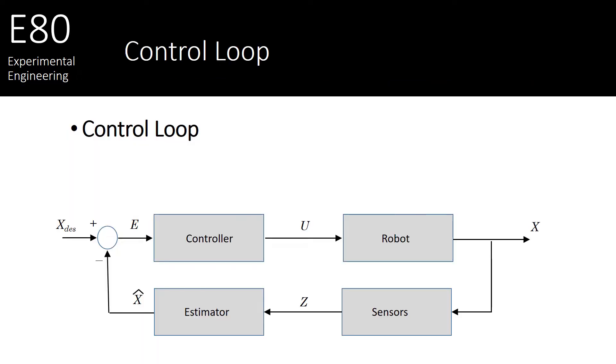If you recall, last time we discussed autonomous robot navigation, and we said that we're going to use this control loop to help us enable our robot with autonomous navigation capabilities. Today we're going to talk about the estimator and the sensors used by the estimator.